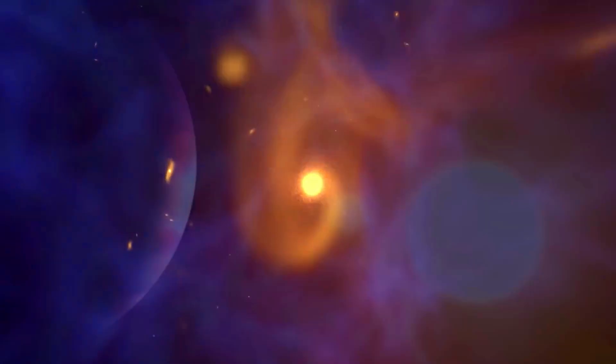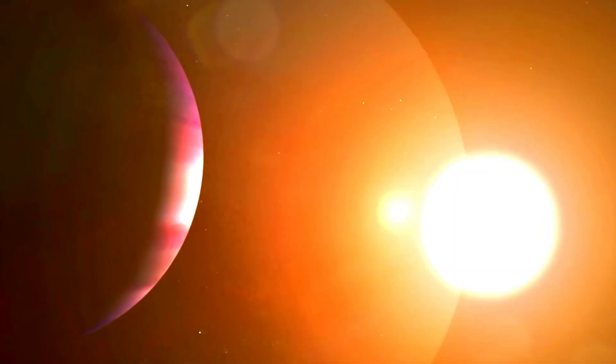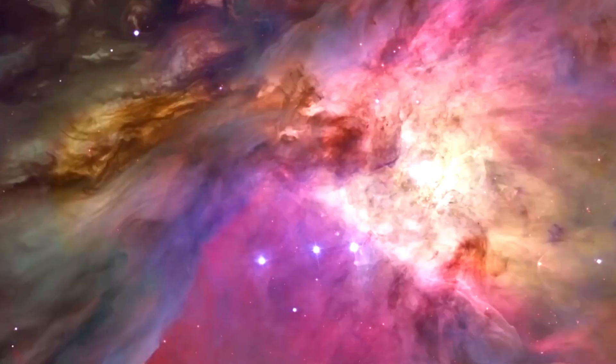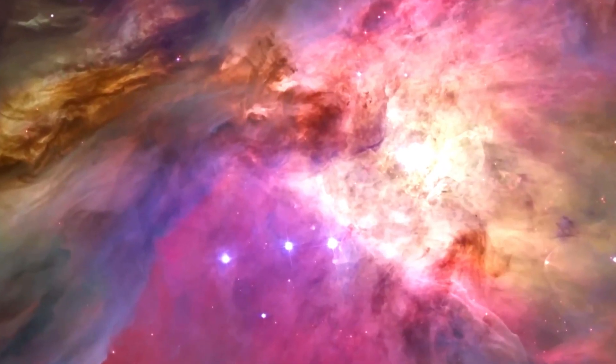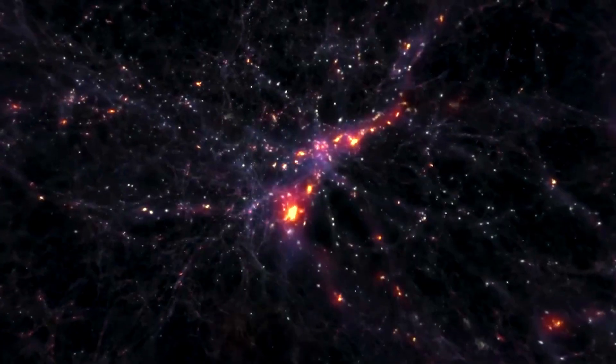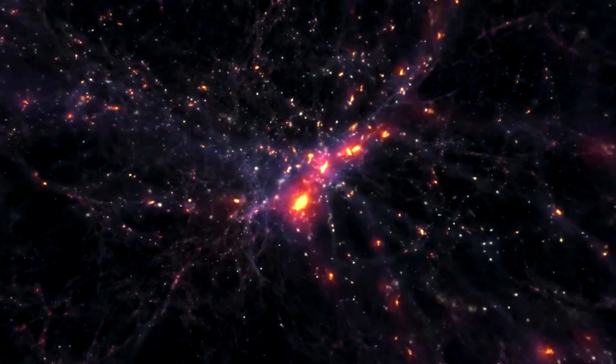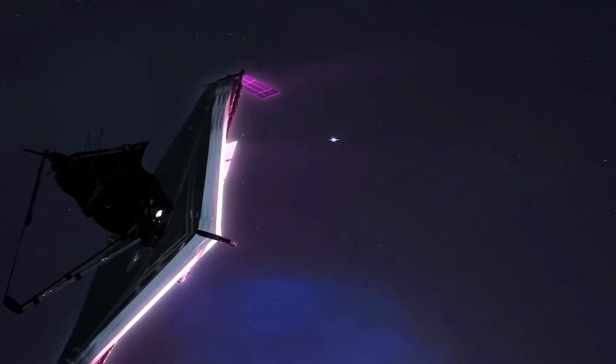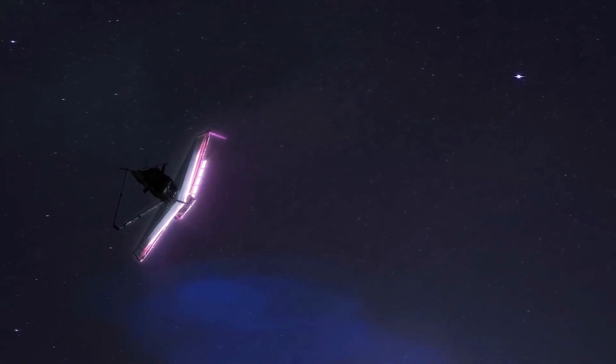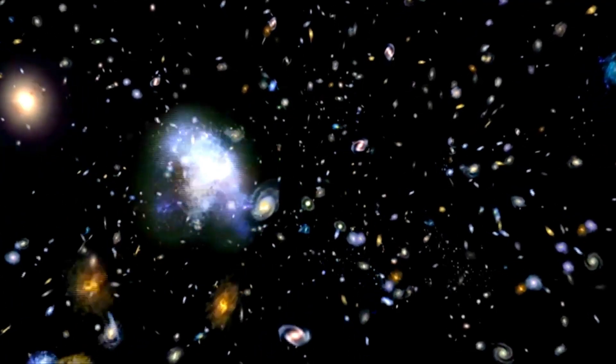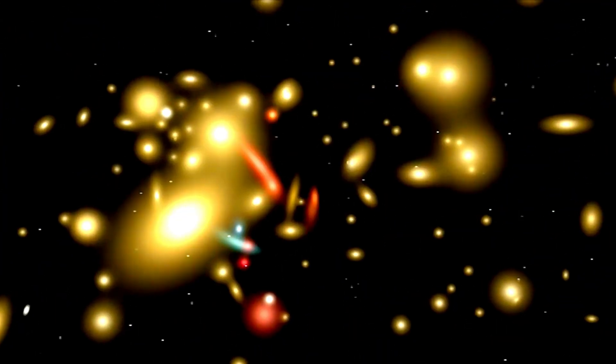The James Webb Space Telescope was built to see the first galaxies. But what it's truly doing is reshaping our understanding of everything—time, matter, biology, and our place in the cosmic drama. It's unveiling an early universe more mature and complex than we ever imagined. It's watching stars being born and dying in stunning high definition. It's peeling back the atmospheres of distant worlds, searching for the fingerprints of life. And perhaps most poetically, it's finding the seeds of biology nestled within the cradles of planetary birth.